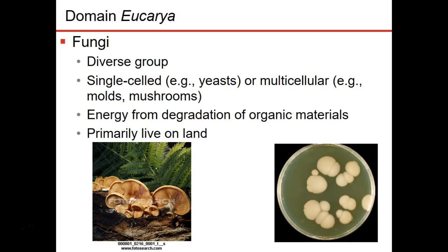Fungi can be single-celled, in which case they're called yeasts, or multicellular, in which case they're called molds. An example of a mold is a mushroom. They are heterotrophic — specifically chemoheterotrophs, just like we are — but they eat by absorbing nutrients. Fungi live in moist environments and are terrestrial, meaning they don't live in water. They live on land, but the land has to be very moist for them to grow.